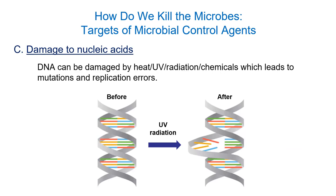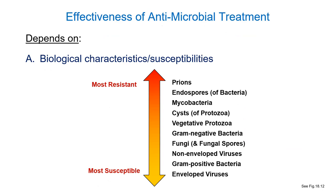How effective these methods are depends on a number of variables. One is the inherent biology of the organism. Endospores are super tough — not quite as tough as prions, but very tough. They've got thick peptidoglycan and chemicals designed to protect DNA. If you have something that can kill endospores, you're hitting that gold standard. Prions don't usually come up in most medical situations, but they're even tougher.